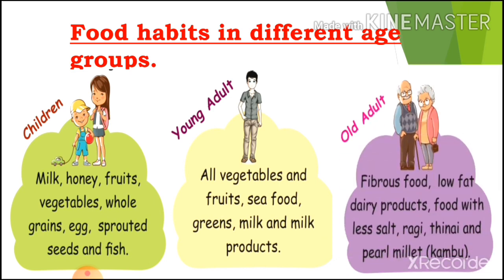Next is old adults. Old adults should eat foods high in fiber and low-fat dairy products. They should eat food with less salt, and prefer unpasteurized or pure milk.